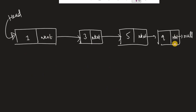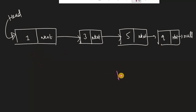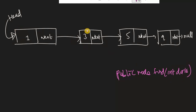Let me first explain this visually so it's easier to understand how to code it. Here we have an integer linked list. As you already know, the head field always points to the first node, and there is a connection between each node because the next field contains a reference to the next node. This is how they're connected, and the next field of the last node always points to null.